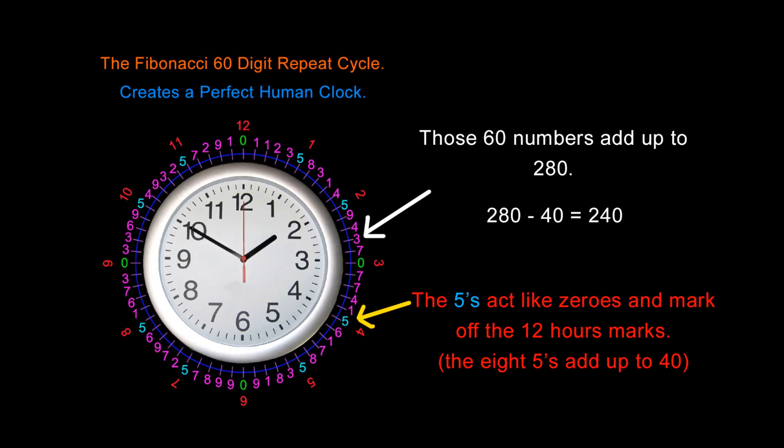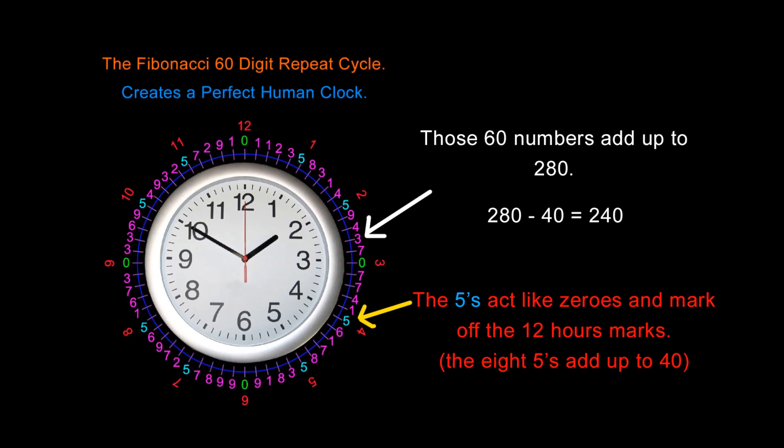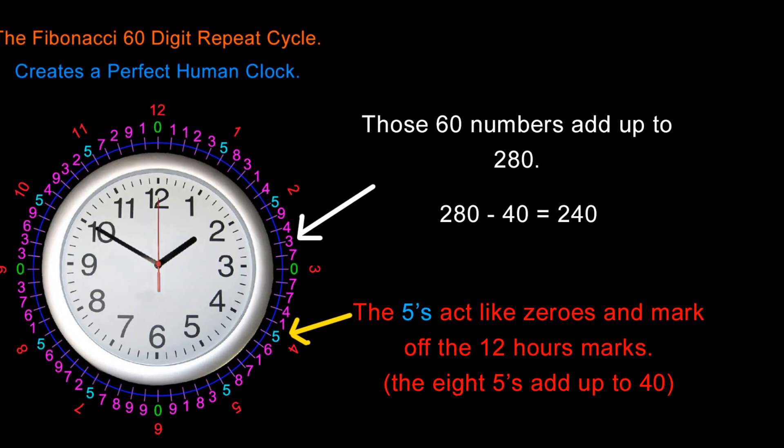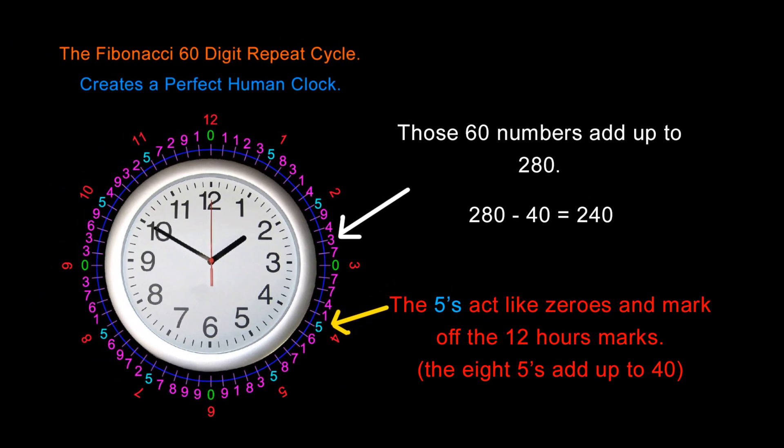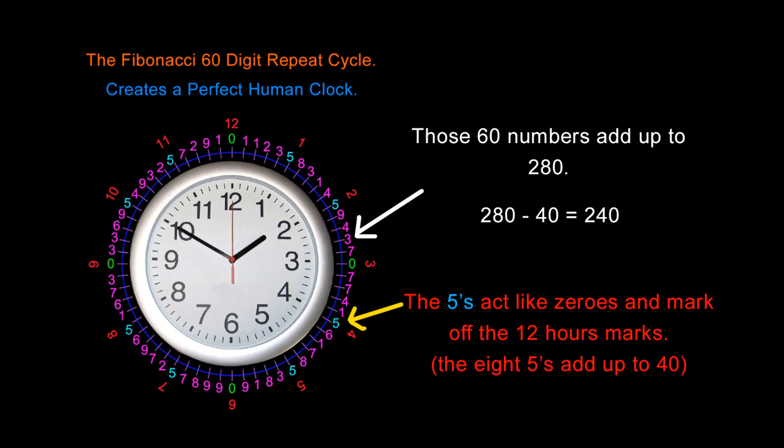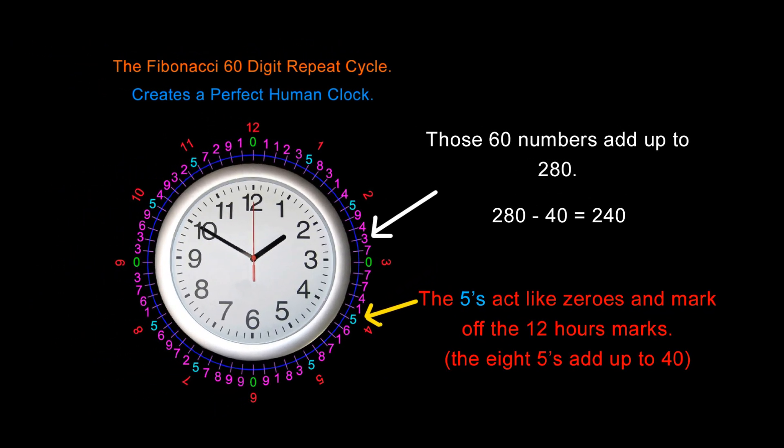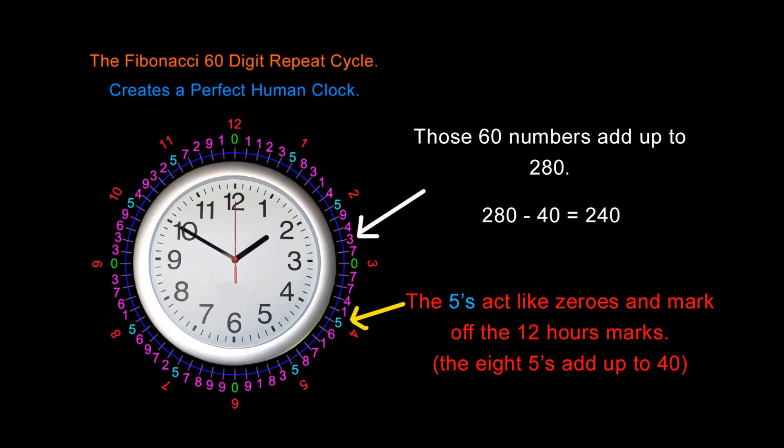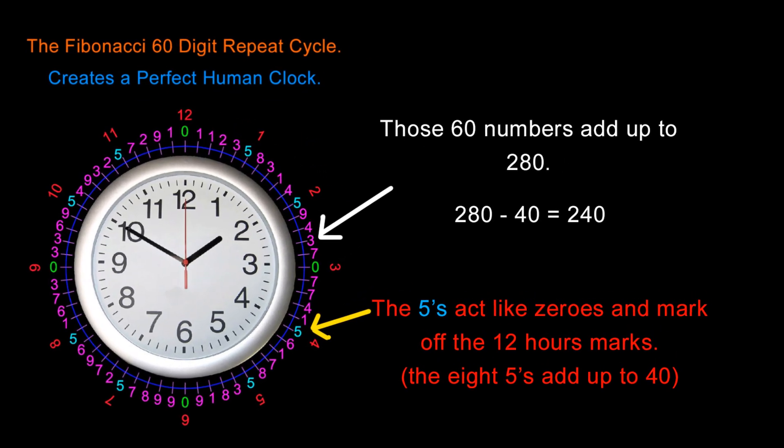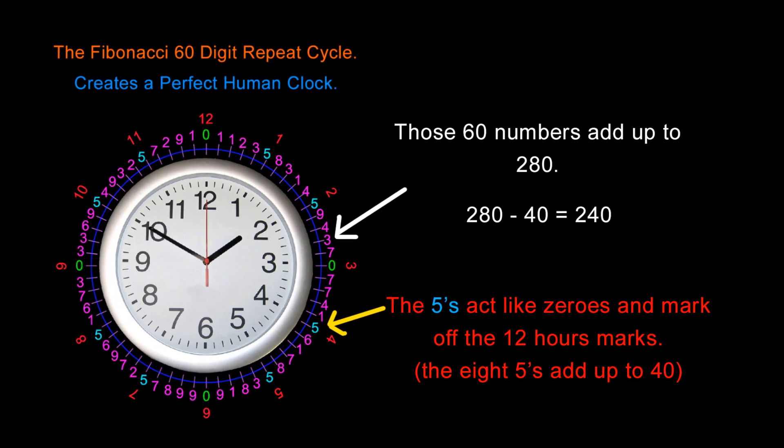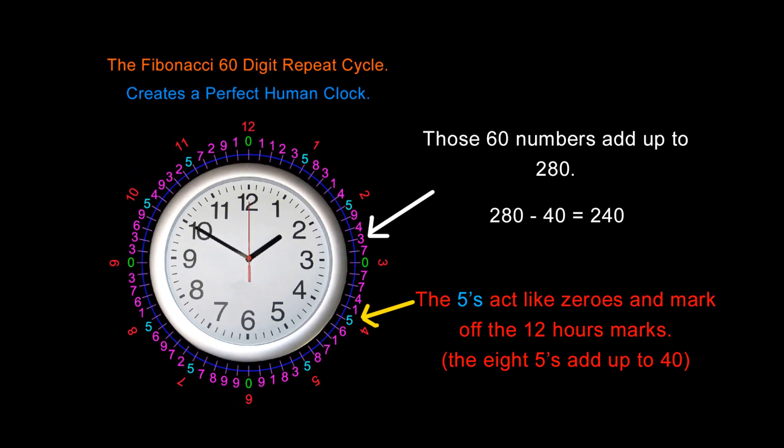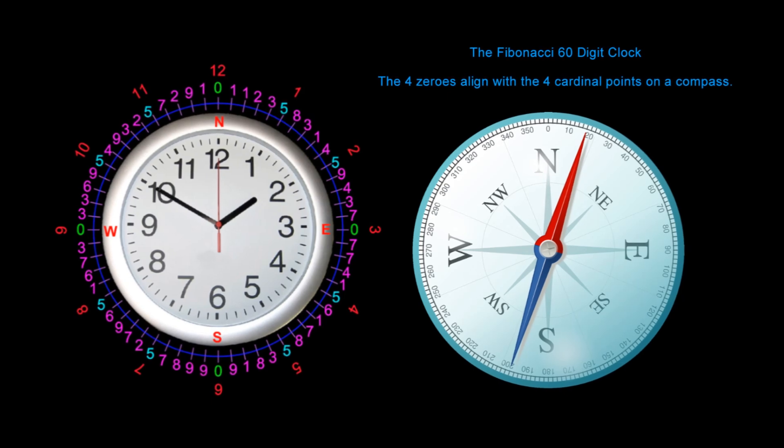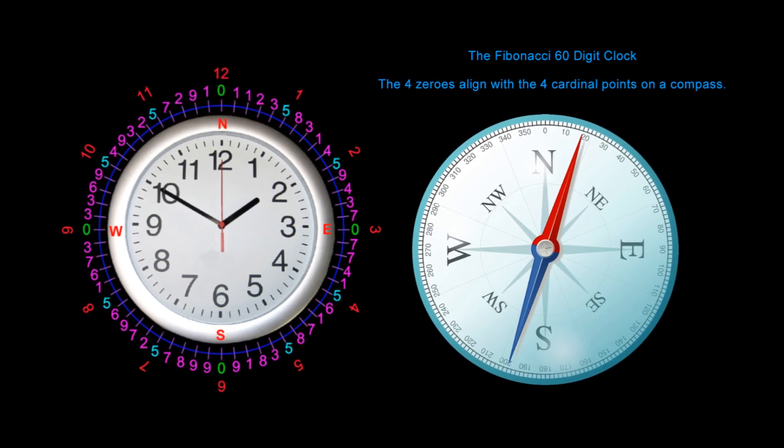Now, look at this Fibonacci clock once again. The entire clock adds up to 280. But if I subtract all the fives which act like the zeros and mark off the 12-hour marks, I get 280 minus 40 equals 240. See the first few videos for an explanation of this. So the Fibonacci 60-digit clock less the fives adds up to 240. We have 24 hours in one day and we use 360 degrees on a compass.